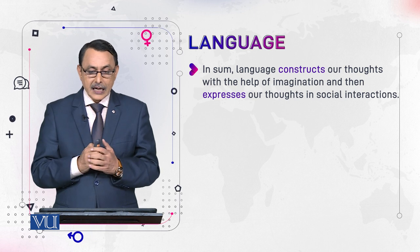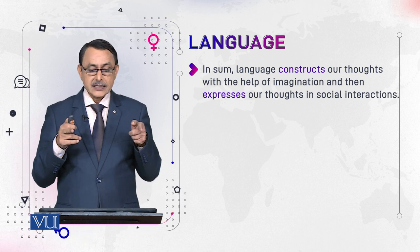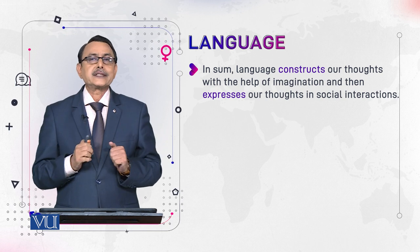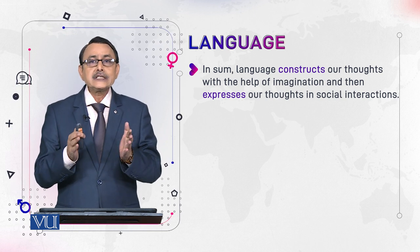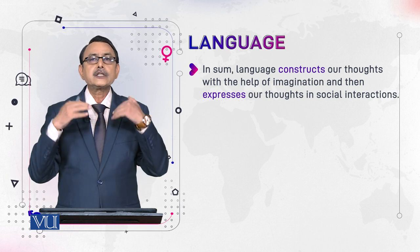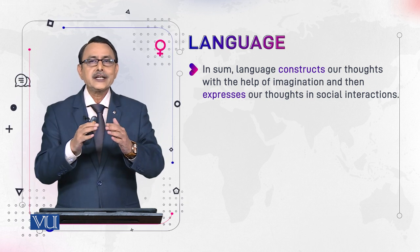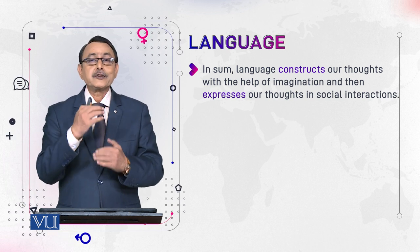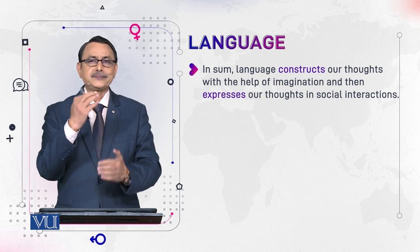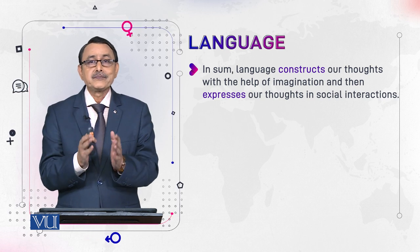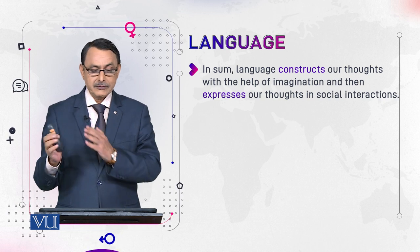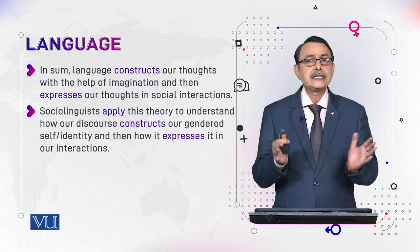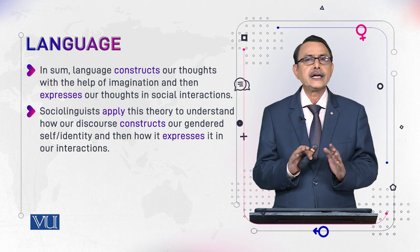Language builds our thought on one side, and on the other side it expresses our thoughts in social interaction. This is the function of language — this is how it connects mind with the word, with the world. Social linguists apply this theory of world building and possible worlds to understand how our use of language constructs our gendered self.